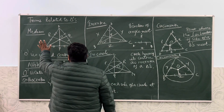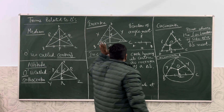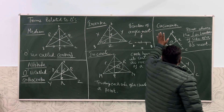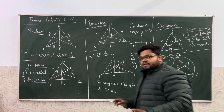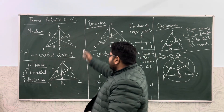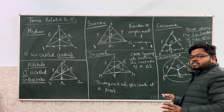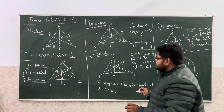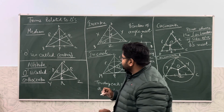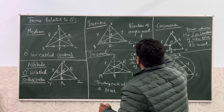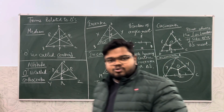So what did we discuss? Median, altitude, incenter, incircle, circumcenter, and circumcircle. All these topics are very closely related to each other, so make sure you practice and go through the theory in the textbook so that you understand very clearly. Thank you, class.